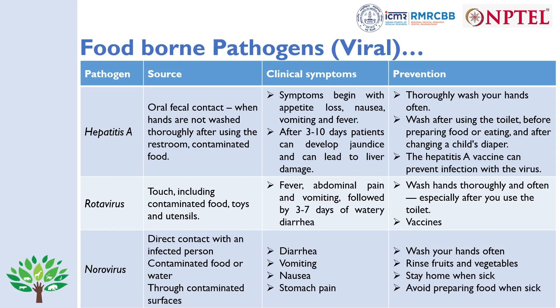Hepatitis A spreads through oral-fecal contact when hands are not washed thoroughly after using the restroom or through contaminated food. Symptoms include loss of appetite, nausea, vomiting, and fever; after three to ten days of infection, patients can develop jaundice, which can lead to liver damage. Prevention includes thorough and frequent handwashing after using the toilet, before preparing food or eating, and after changing a child's diaper. A hepatitis A vaccine can prevent infection.